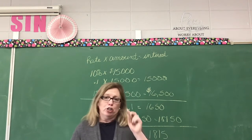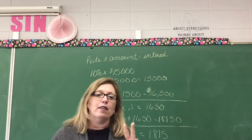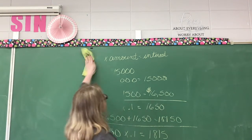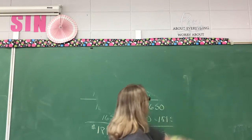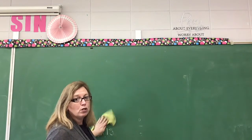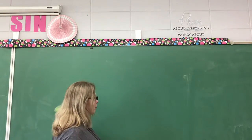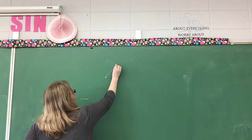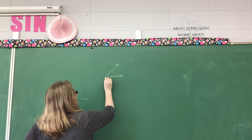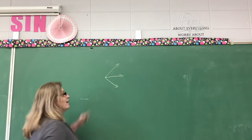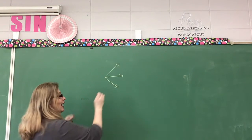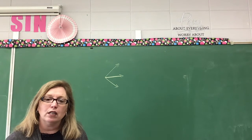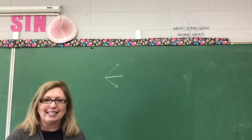If I have two angles that share a vertex — I'm going to write this out so you can see it — two angles that share a vertex and share a side, what are they called? They're called adjacent angles.